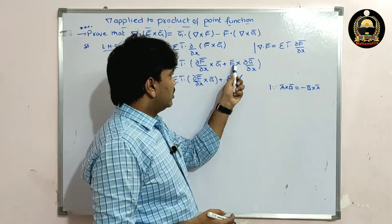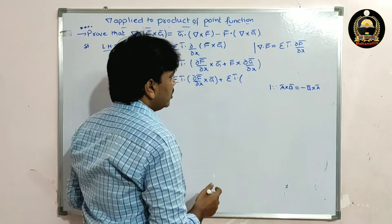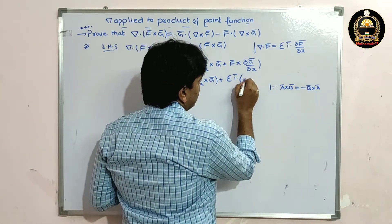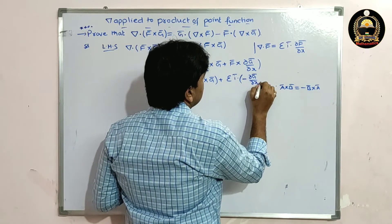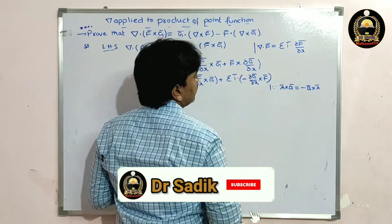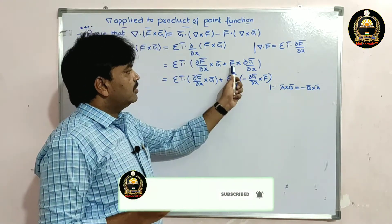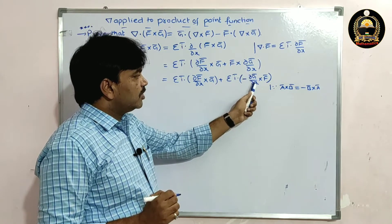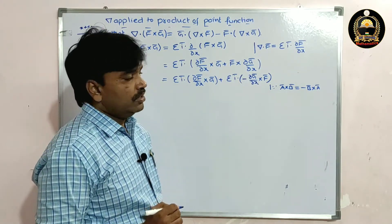So here, f-bar cross dou g-bar by dou x can be rewritten using this property. We write it as minus dou g-bar by dou x cross f-bar. So f-bar cross dou g-bar by dou x equals minus dou g-bar by dou x cross f-bar.